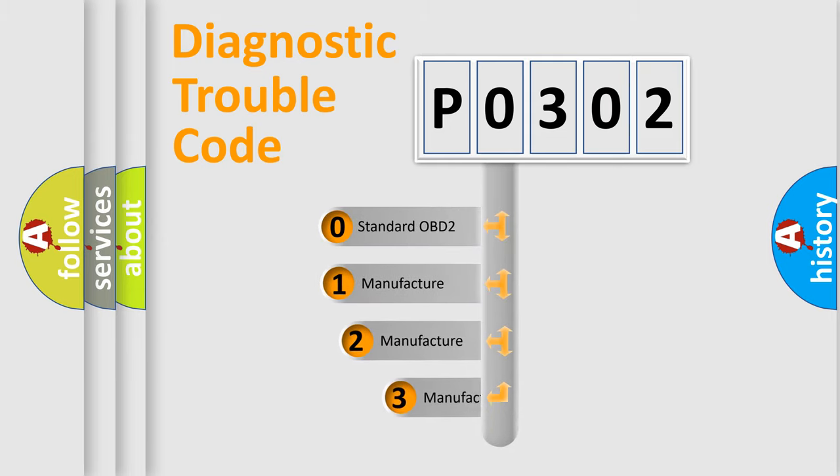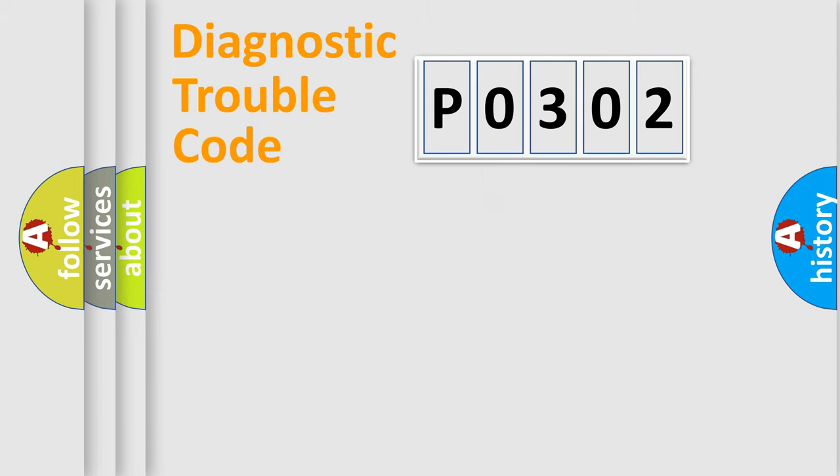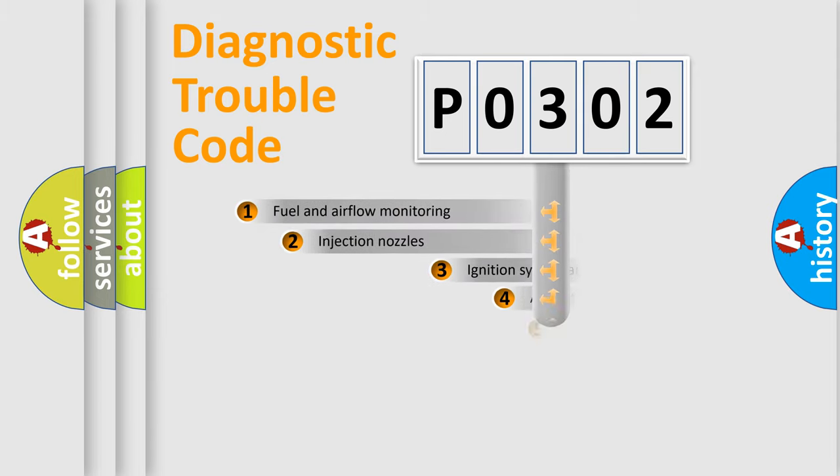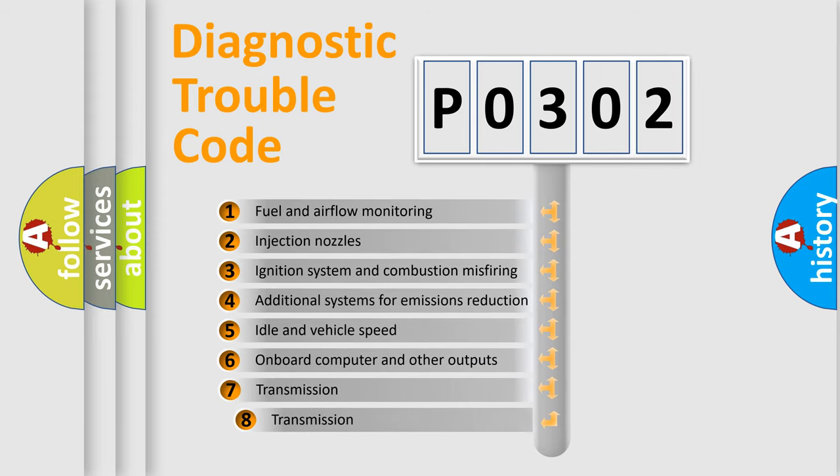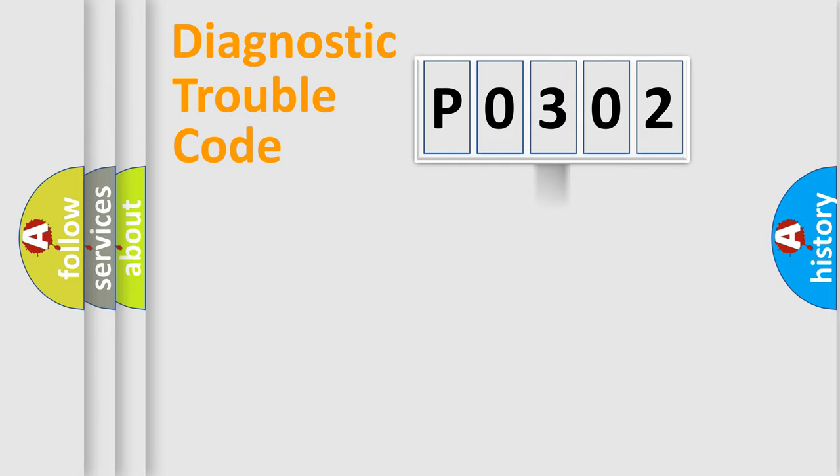If the second character is expressed as zero, it is a standardized error. In the case of numbers 1, 2, 3, it is a more prestigious expression of the car specific error. The third character specifies a subset of errors. The distribution shown is valid only for the standardized DTC code.